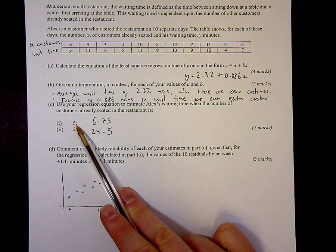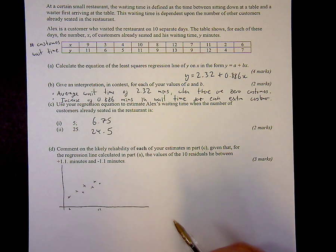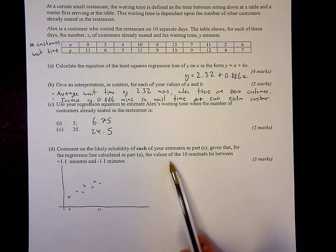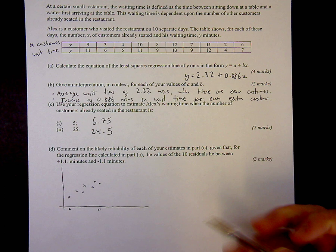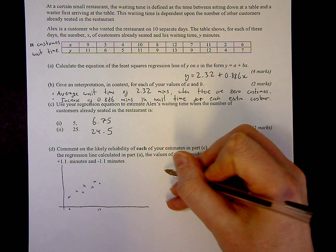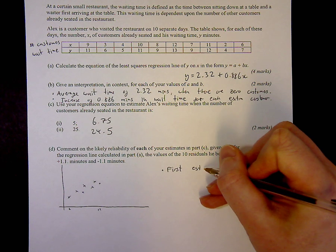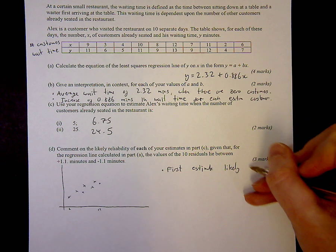For the first one, the first estimate is likely to be reasonably accurate to within plus 1.1 and minus 1.1 of the value, because that seems to be what my residuals are within. So it should be around 6.75, but maybe plus 1.1 or minus 1.1 within those boundaries. The second estimate, however, we look at what it's asking for, it's asking for a value of 25 for the number of customers.